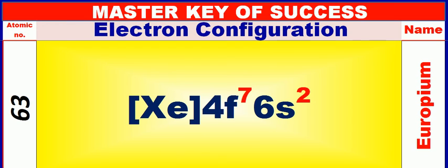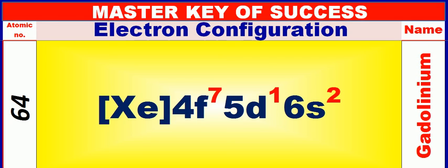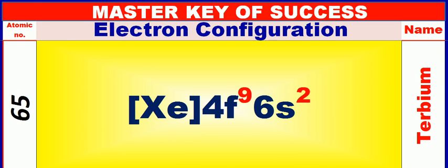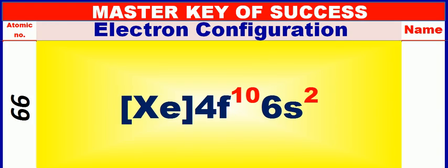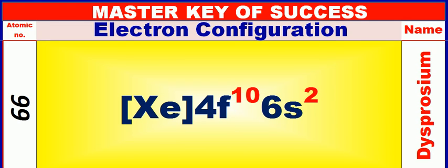Atomic number is 63 and name of atom is Europium. Atomic number is 64 and name of atom is Gahillinium. Atomic number is 65 and name of atom is Terbium. Atomic number is 66 and name of atom is Dysprosium.